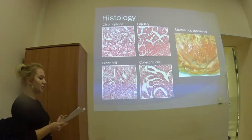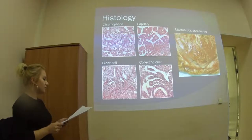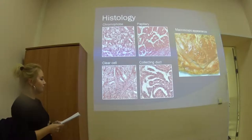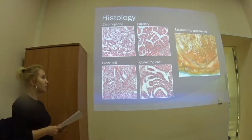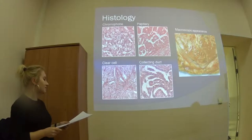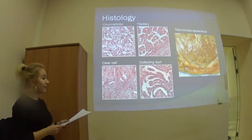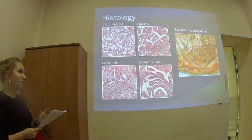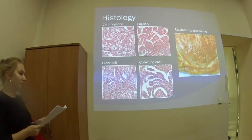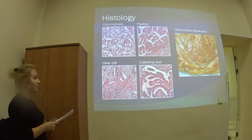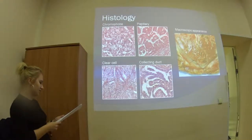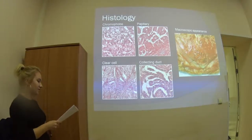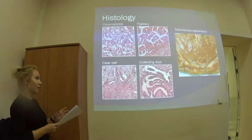Papillary RCC can be multifocal or bilateral and is the most common form of dialysis-associated renal cell carcinoma. The third one is chromophobe renal cell carcinoma, which takes about 5% and arises from intercalated cells of collecting ducts. It's very similar to renal oncocytomas and has the best prognosis of all these types. The last one is the collecting duct renal cell carcinoma, which takes less than 1% and is usually seen in younger patients with diverse prognosis.